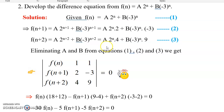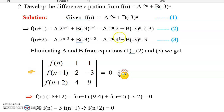Using the determinant method to eliminate constants A and B: the first column is f(n), f(n+1), f(n+2). For the second column, since A·2^n is common in all three equations, after removing the common terms, the remaining coefficients are 1, 2, 4. For the third column, B·(-3)^n is common in all three equations, so after removing those common terms, the remaining coefficients are 1, -3, 9. The determinant equals 0.